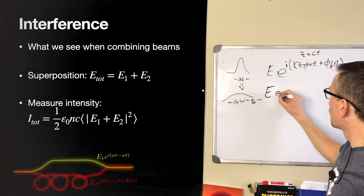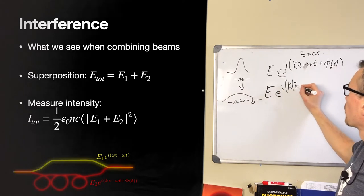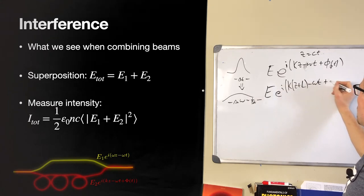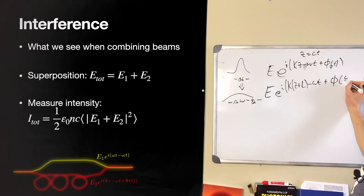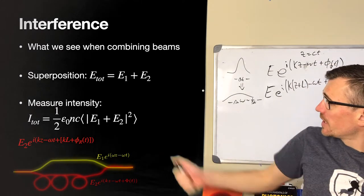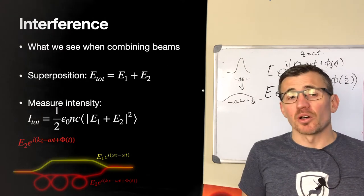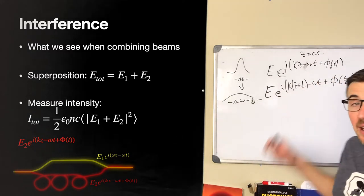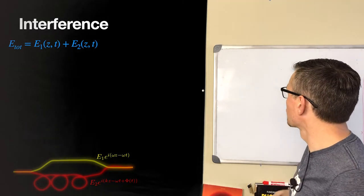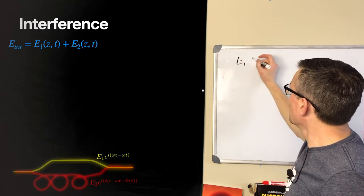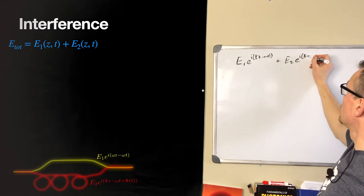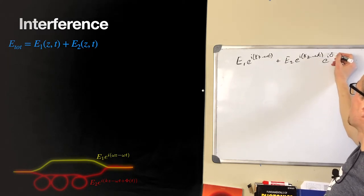In the lower path, we've gone e to the i k times the extra length l, minus omega t, plus whatever the phase is at that time t equals l over c. We can clump that phase together and call it phi r, a random phase. It has a constant term kl but also a random variation. Factoring out the common term e to the i(kz minus omega t), we get E1 plus E2 times e to the i phi r.